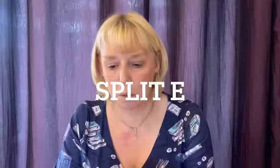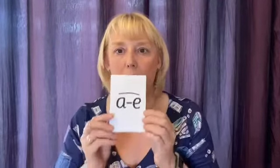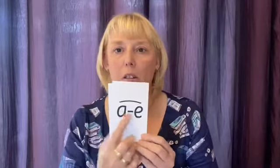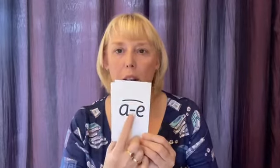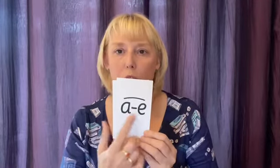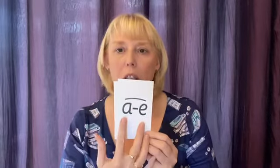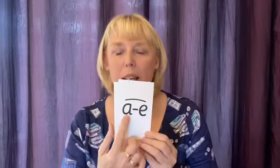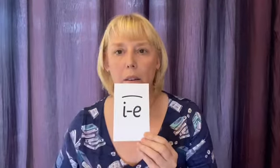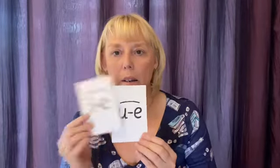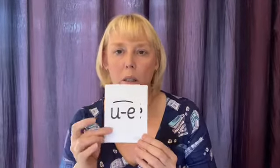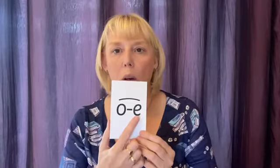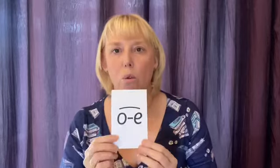The first four Set 3 sounds I want to talk about are called a split E, or a split digraph. These are indicated with a line that goes over and a dash in between, showing that these two sounds are separated in words. The split E makes the vowel say its name — so 'a_e' says A, 'i_e' says I, 'o_e' says O, and 'u_e' says U. The E is silent in all of those.